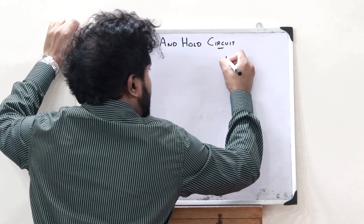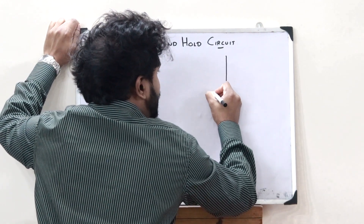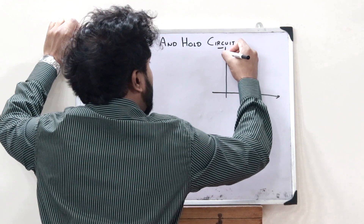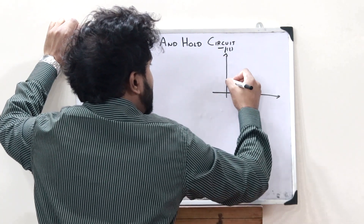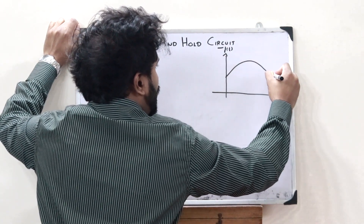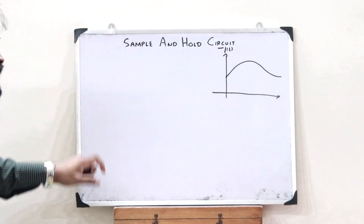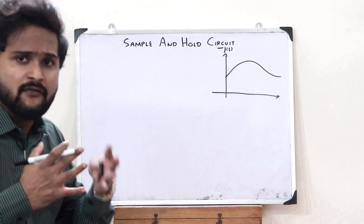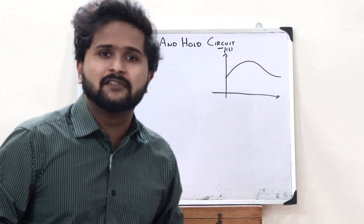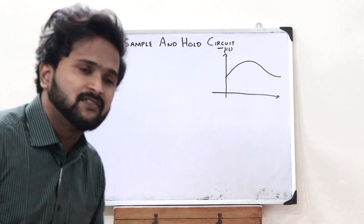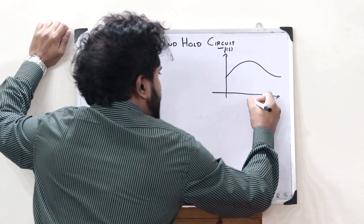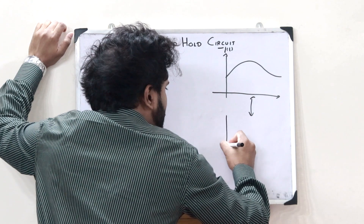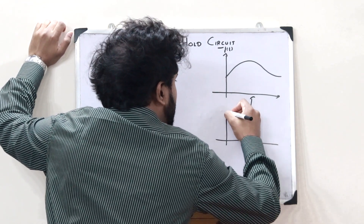Let us consider a particular analog signal. So let us consider an analog signal f(t), something like this over here. So this is an analog signal. When we multiply this particular signal with a train of impulses, we get a sampled signal. Upon sampling this particular signal, we would get a sampled signal like this.